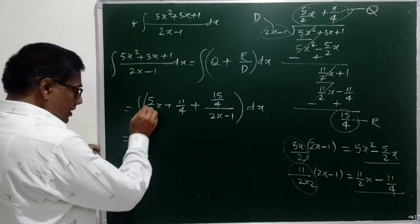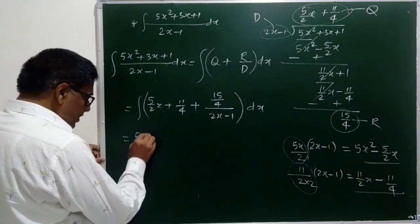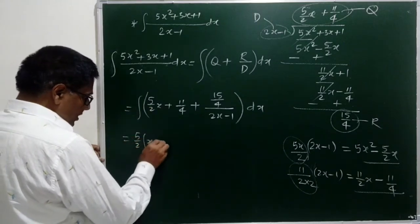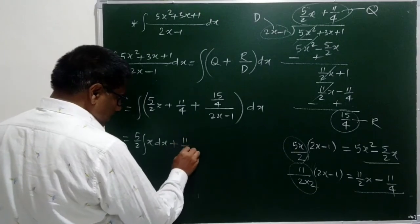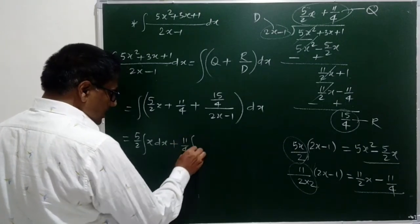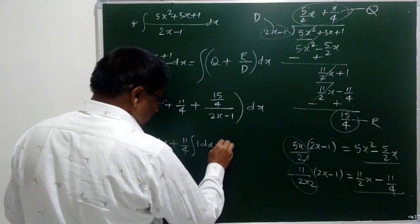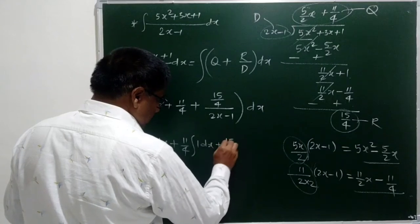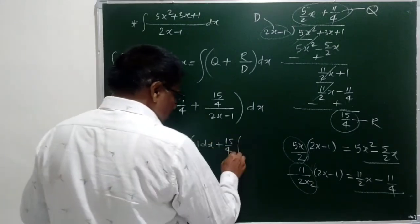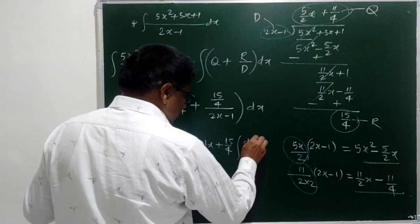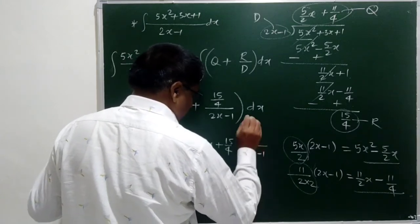This is equal to: we can take 5 by 2 as a constant outside the integral of x dx, plus 11 by 4 as a constant outside the integral of 1 dx, plus 15 by 4 as a constant outside the integral of dx upon 2x minus 1.